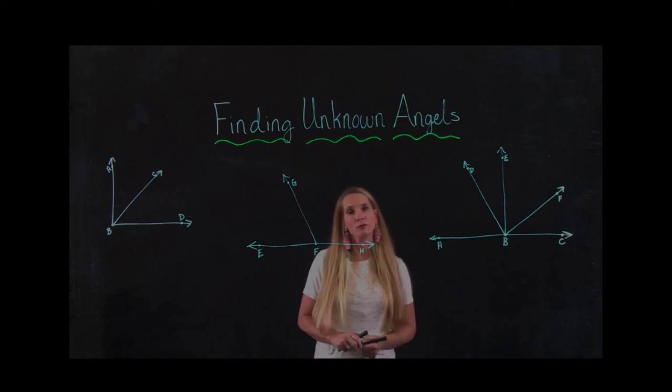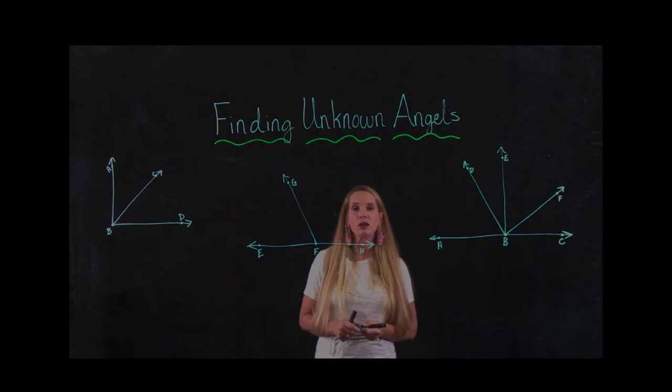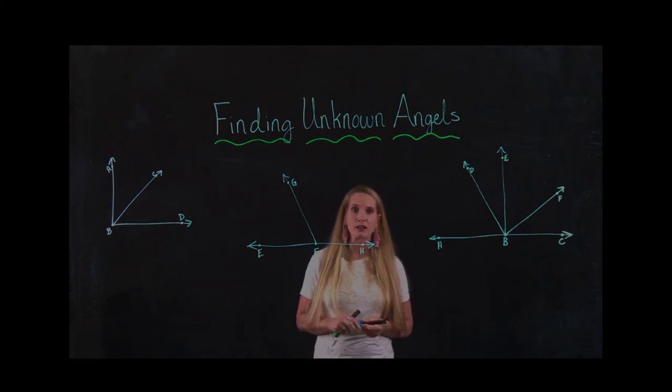So earlier in the week, we learned how to measure angles and find the measurement of an angle using a protractor. Given if it's a right angle, we know that it's 90 degree angle. Looking at acute, what those measurements might be, and if it's an obtuse angle, knowing it's greater than 90 degrees but less than 180. So we looked at that the first part of the week.